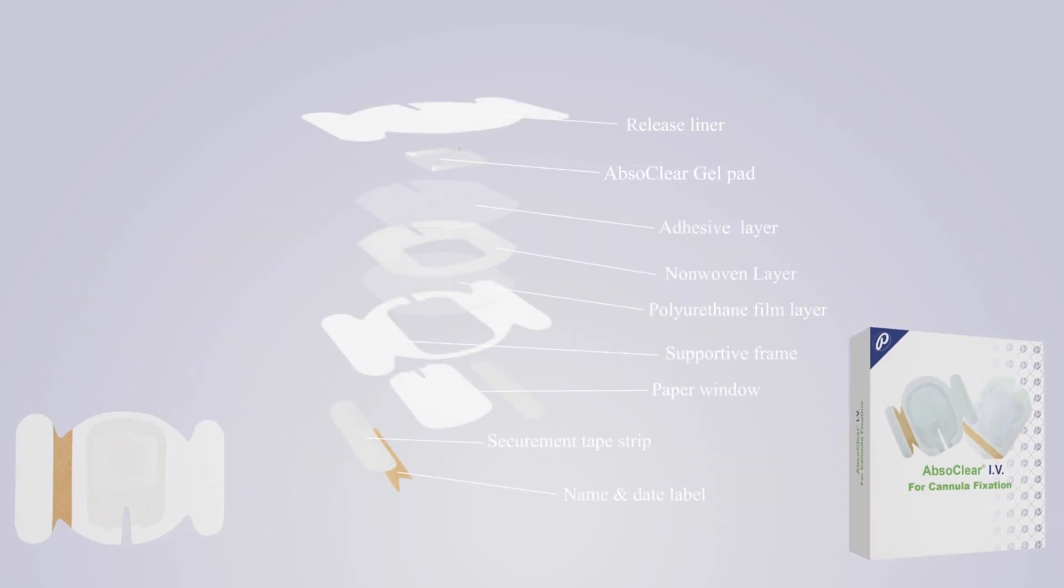AbsoClear IV is a water-clear hydrogel made of ionic, acrylic polymer and glycerol. Being ionic means that AbsoClear IV is highly absorbent due to its high osmotic effect.